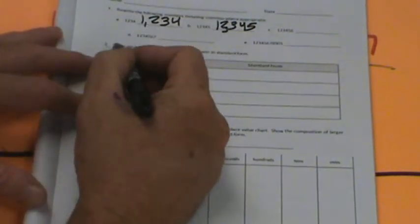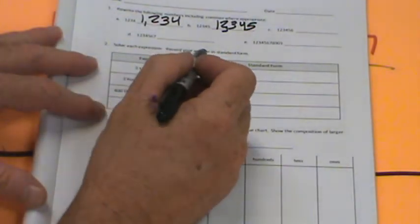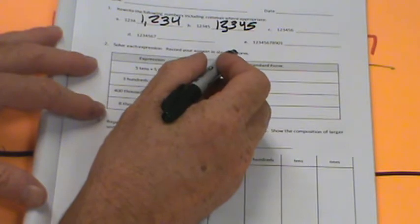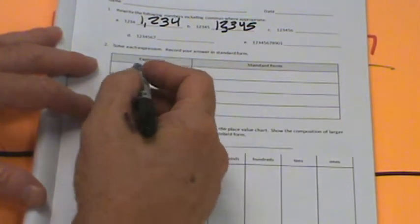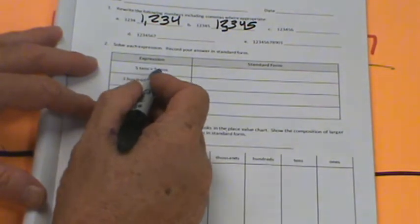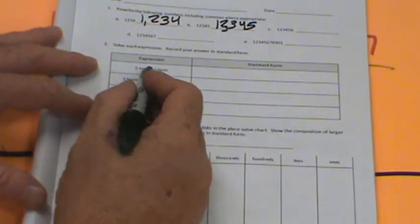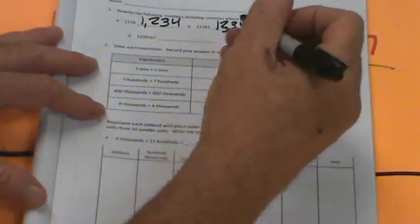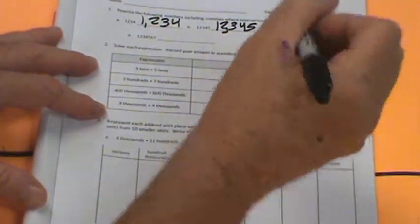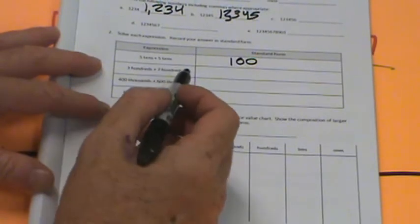Our next block says solve each expression. Record your answer in standard form. So five tens plus five tens. Well think about five tens are 50 plus 50. What's 50 and 50? Remember this equals ten tens, right? Five plus five. Ten tens is one hundred.